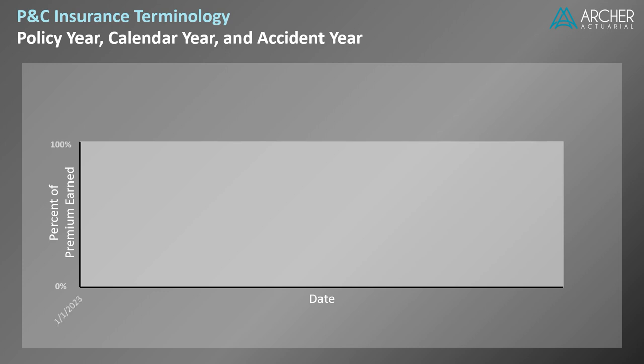Let's populate the x-axis with some arbitrary dates. We're going to start by looking at an example for a single 12-month policy. Suppose the policy was written on January 1, 2024. The premium is earned uniformly over time and is represented by a straight line extending from January 1st to December 31st of 2024. At the earlier date, the policy is 0% earned, and at the latter date, it is 100% earned.